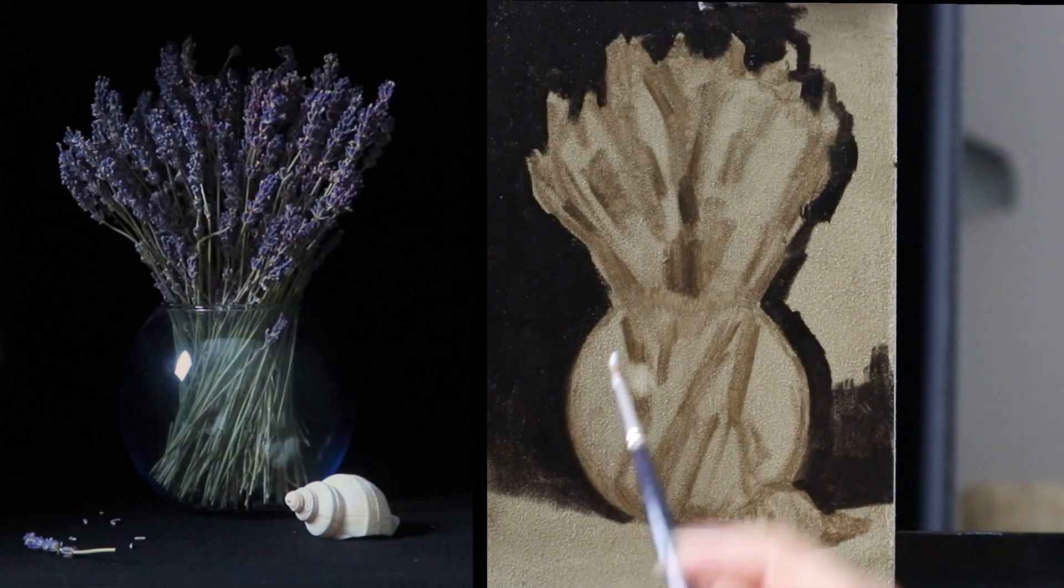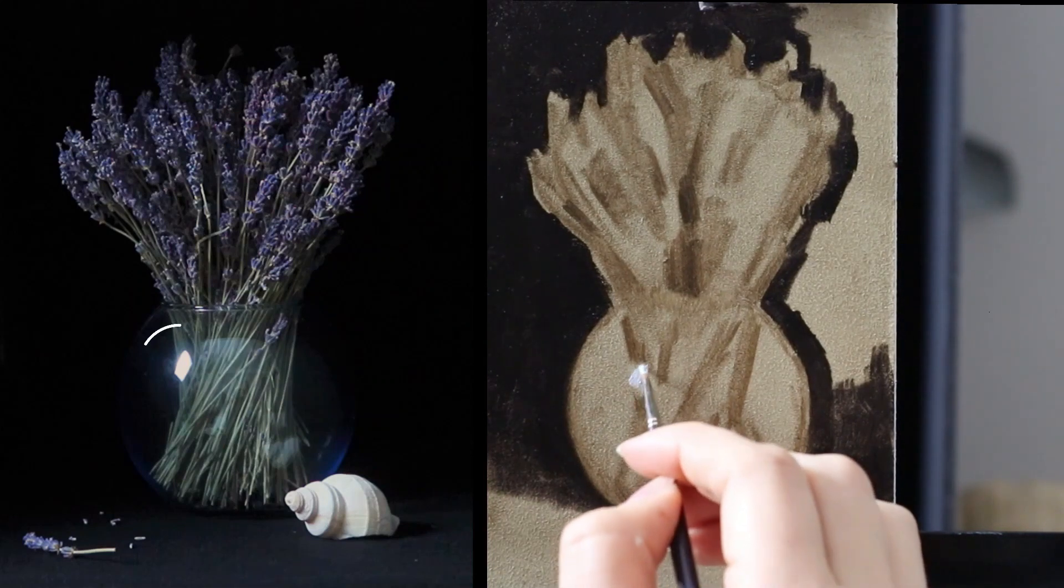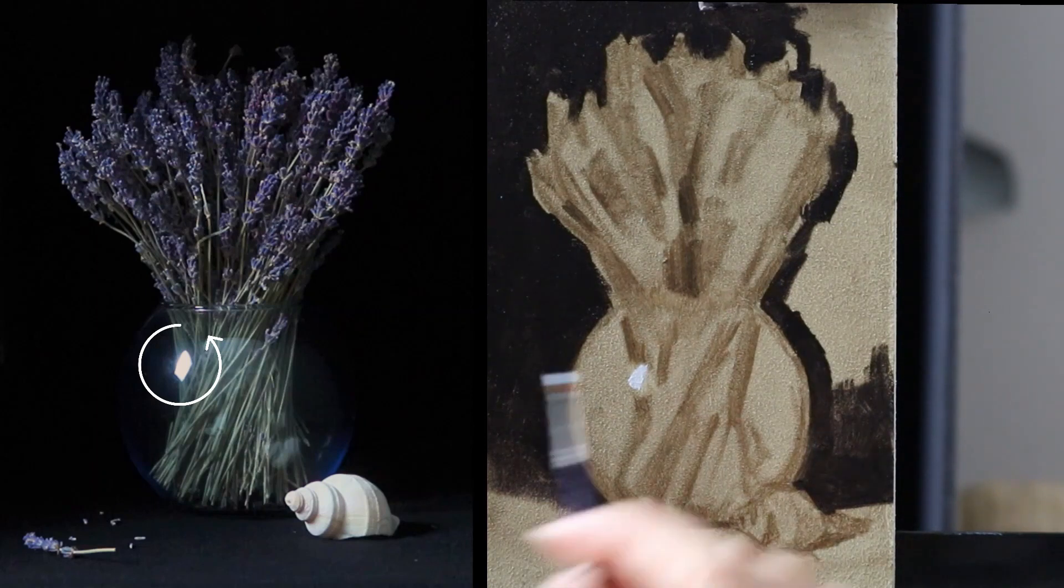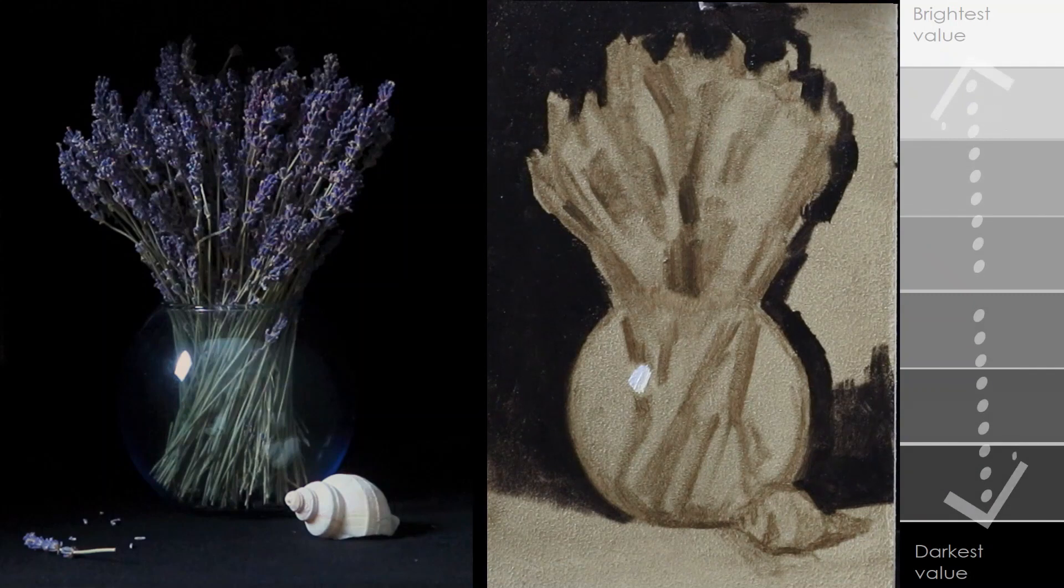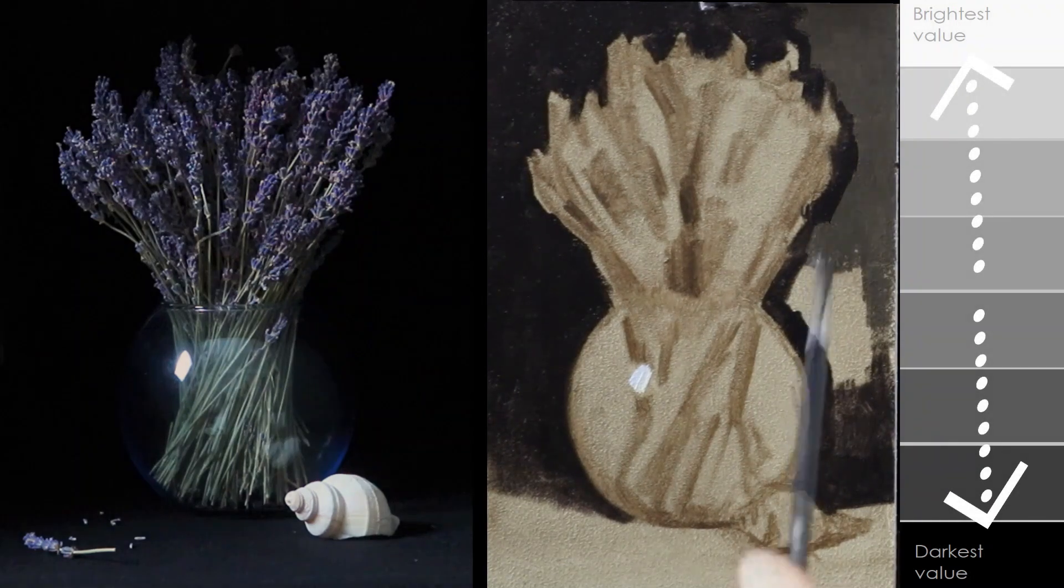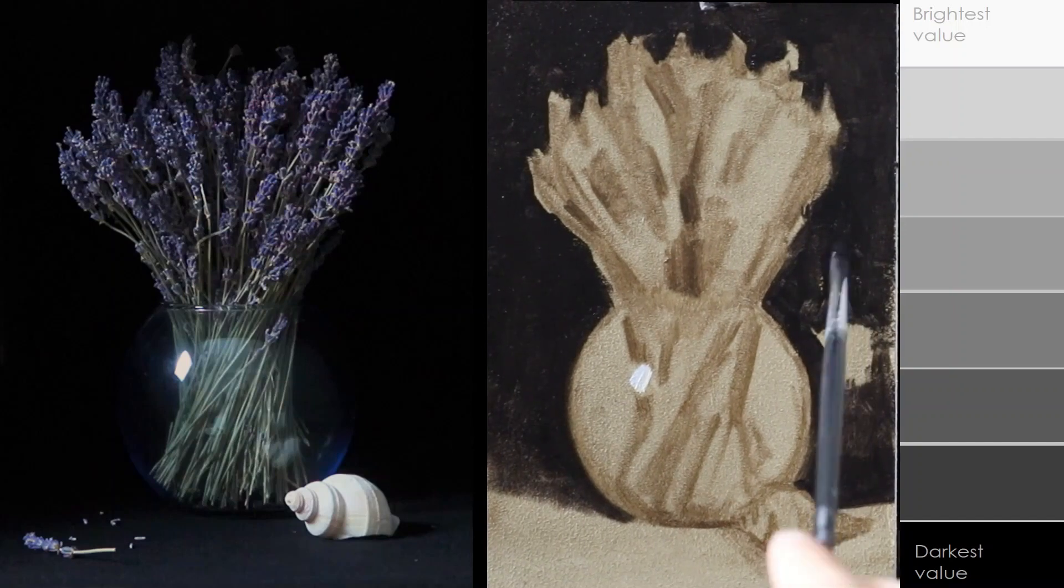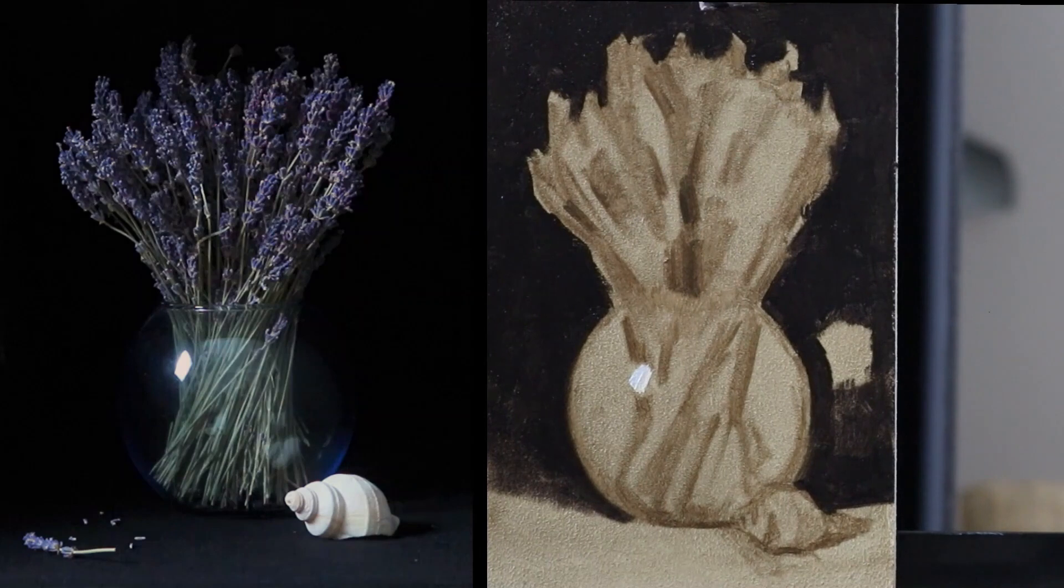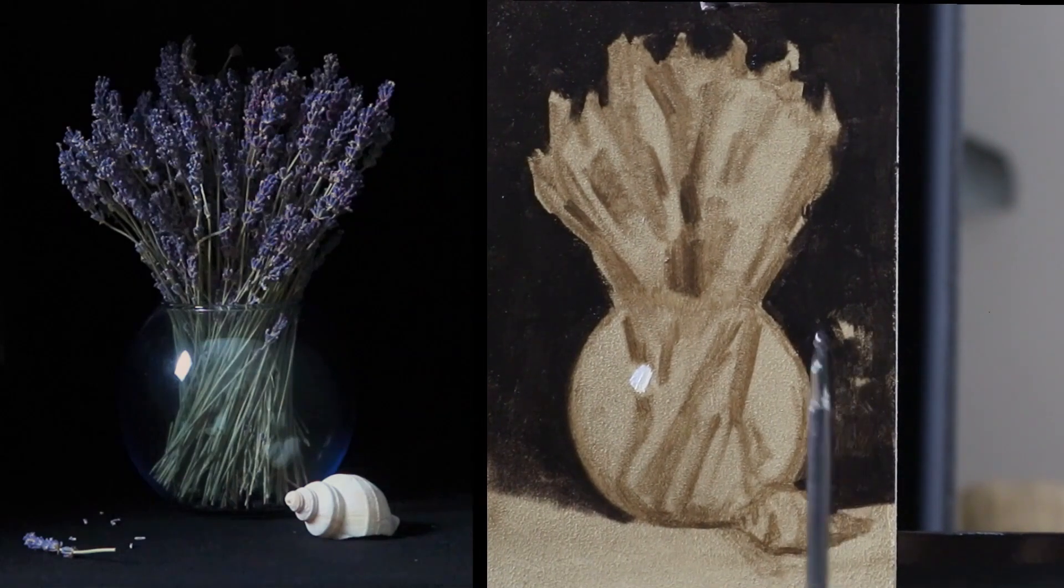When I have covered a large area of the background which consists of the darkest value in the setup, I then apply the brightest value in the setup, the highlights. This way I have established the whole value range I will be working with. Every other color mix and value has to relate to these two outer points to make sure the visual impression of what we are seeing is believable. After I have placed the highlight on the vase I then finish applying the background value.